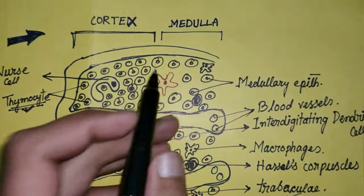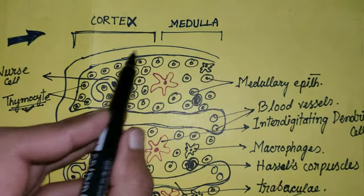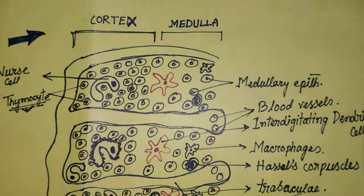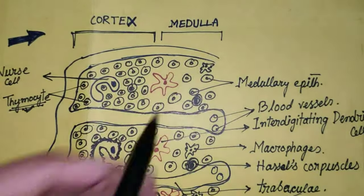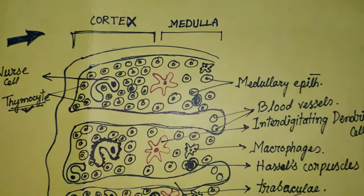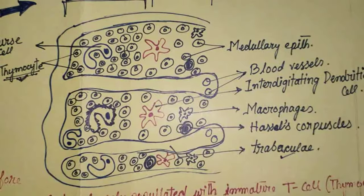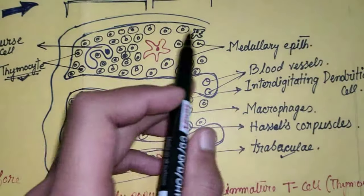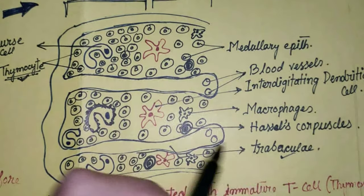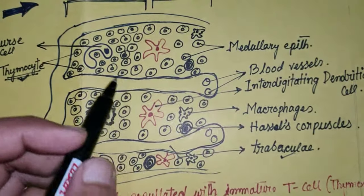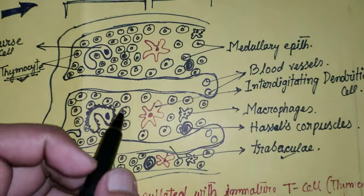Matlab, thymocytes ka density cortex mein zyada hota hai, aur medulla portion mein thymocytes ka jo density hai, wo thoda kam hota hai — thymocytes are densely distributed in the cortex and sparsely distributed in the medulla.